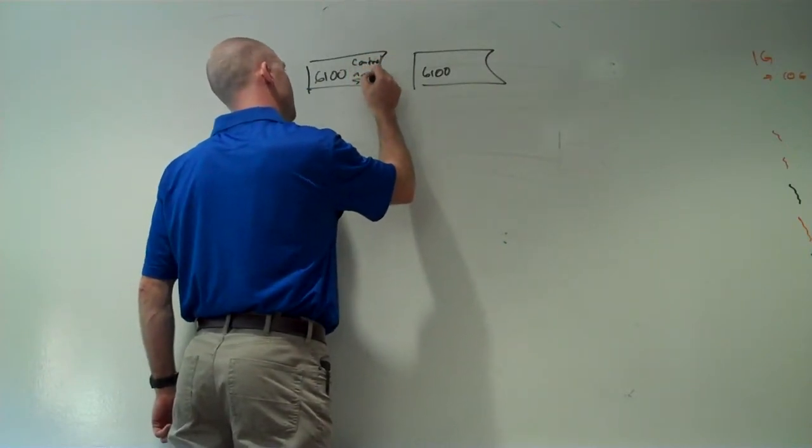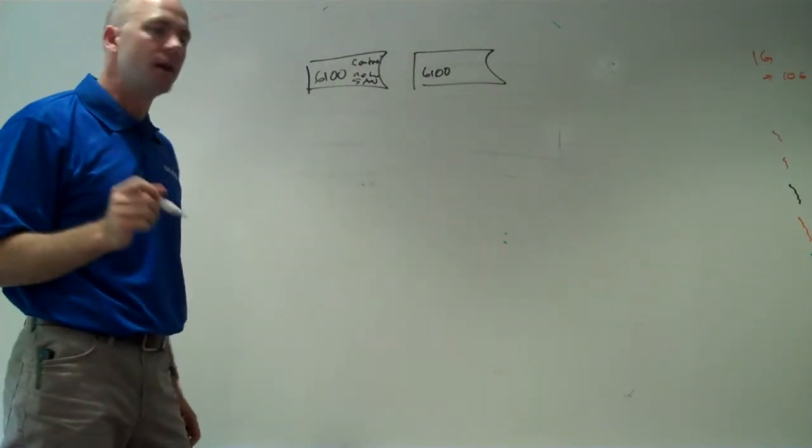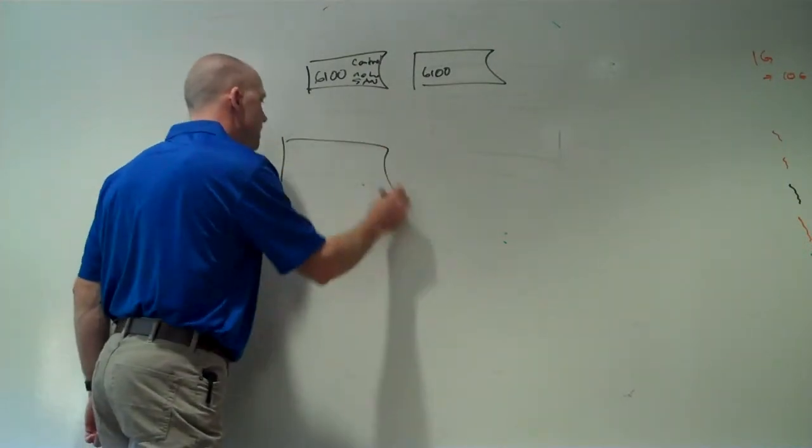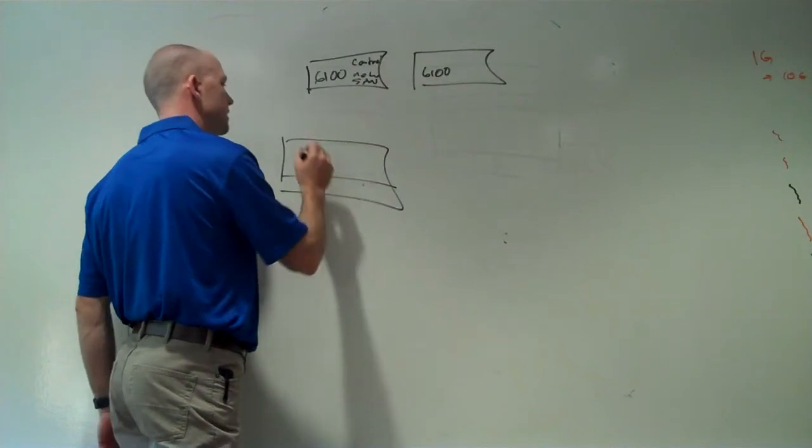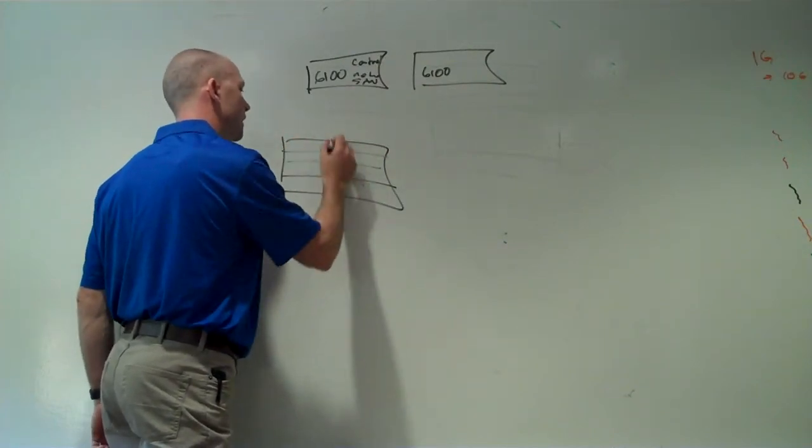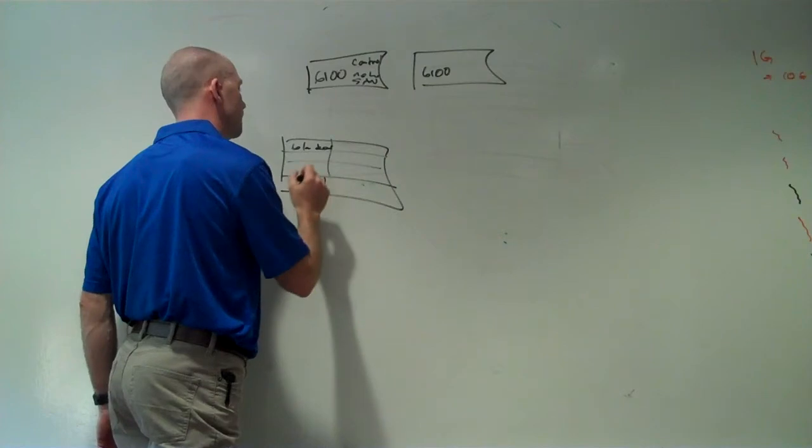and they have the network, and they have the storage area network connections all in there. And then we connect into the chassis, and the chassis just have blades and power. So they don't have all this control stuff in there.